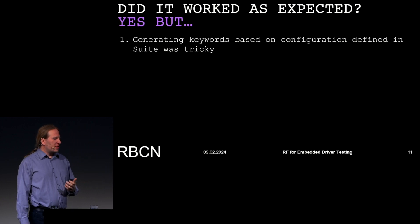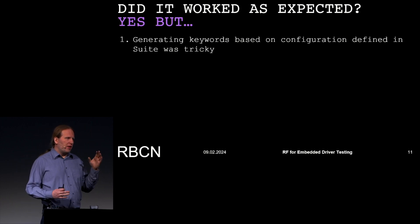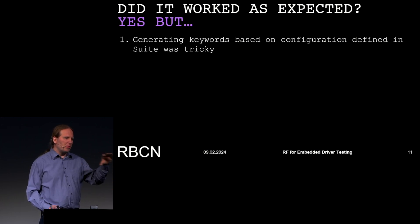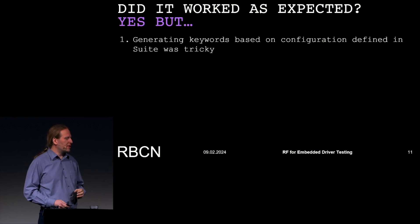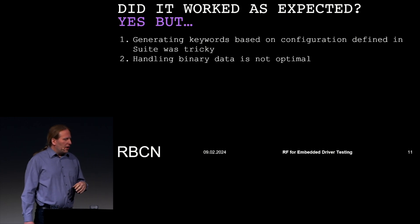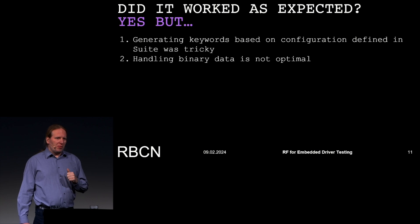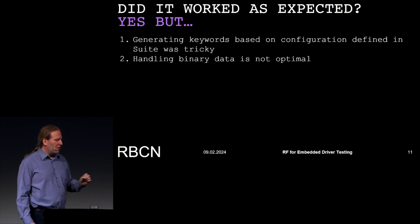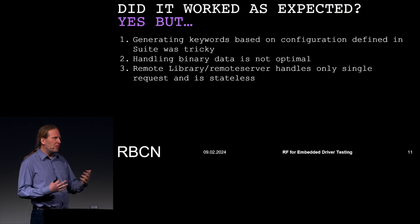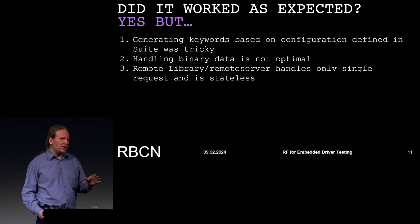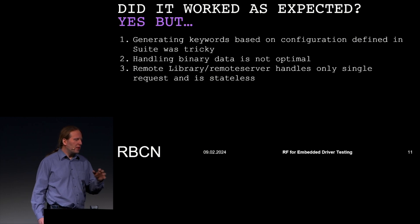Did it work for us? Yes, it worked, but there were some challenges on the road. We needed to generate keywords based on configuration, because we have a lot of different controllers. Each controller can be configured differently for a different project, and each pin can have a different function depending on configuration. Handling binary data is not optimal in the remote framework. The remote library, unfortunately, is HTTP-based, so it wasn't optimal — it was great for first prototypes, but as development progressed we ran into problems and needed extensions.